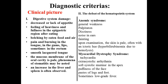Anemic syndrome is represented by general weakness, palpitations, dizziness, tinnitus, and fainting. On examination of the skin, it appears pale — often with a slight icteric hue. Why icteric hue? Because of the destruction of large erythrocytes causing hyperbilirubinemia. Myocardial dystrophy syndrome may develop as tachycardia, extrasystoles, various arrhythmias, or systolic murmur at the apex, or puffiness of the face. If dystrophy of myocardium develops, it appears as lower extremity edema.